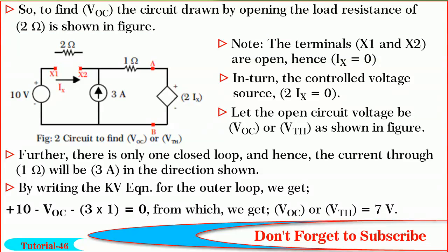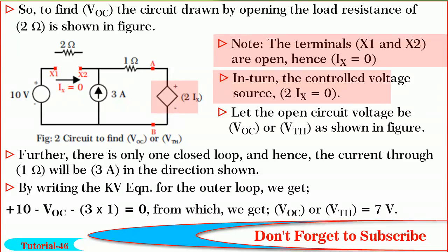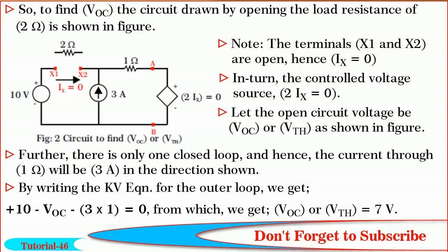This key point you have to understand now. Note the terminals X1 and X2 are open. Hence, IX is equal to 0. In turn, the controlled voltage source of 2IX volts also becomes 0. Thus, it is equivalent to a short circuit as shown.